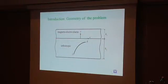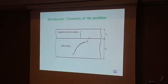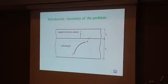The geometry of the problem is presented in this slide. We have a substrate made of orthotropic materials with a curved crack, and a layer made of magneto-electro-elastic material. The bonding of the layer to the orthotropic substrate is not perfect.